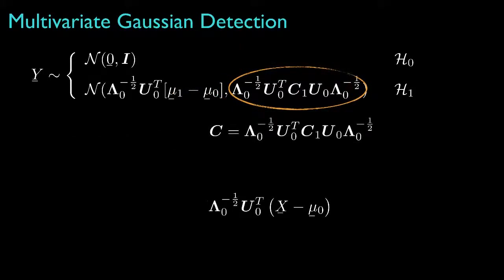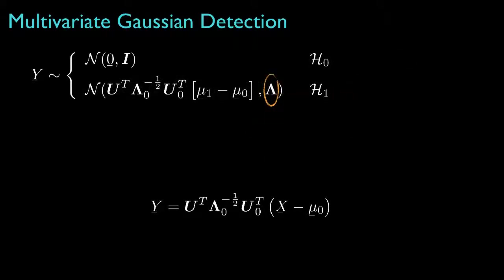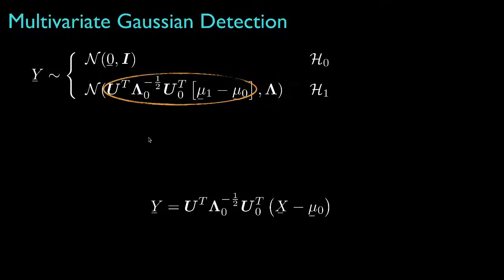Now, this covariance for hypothesis 1, which is determined by the two original covariances, we can now denote as a modified covariance matrix C. And we could decompose it into its matrices of eigenvectors and eigenvalues. Then we could rotate the transformed data by multiplying with the orthonormal matrix of eigenvectors, and this would result in the covariance for hypothesis 1 being the diagonal matrix of eigenvectors for the transformed covariance. The mean for hypothesis 1 will be transformed accordingly.